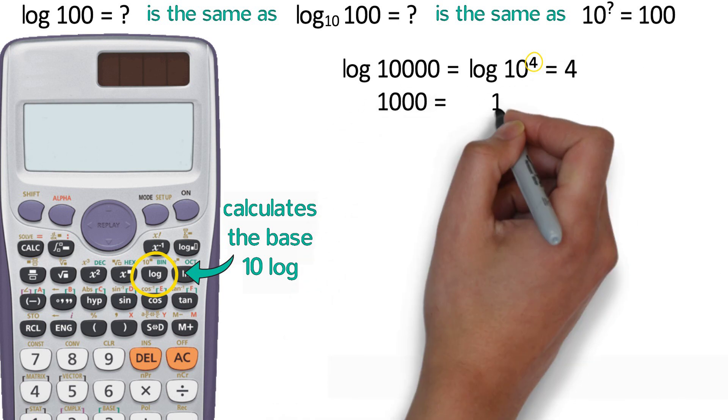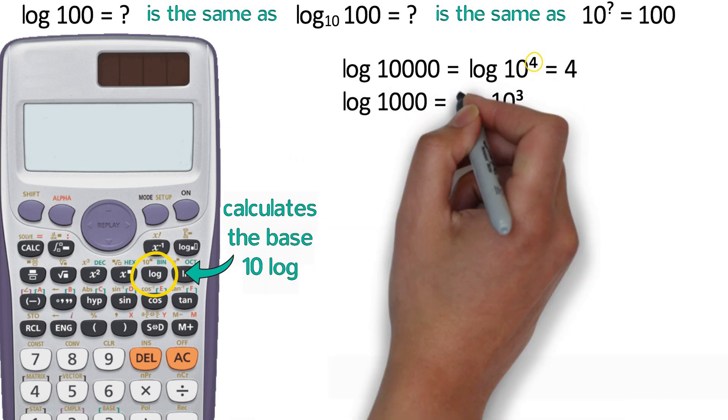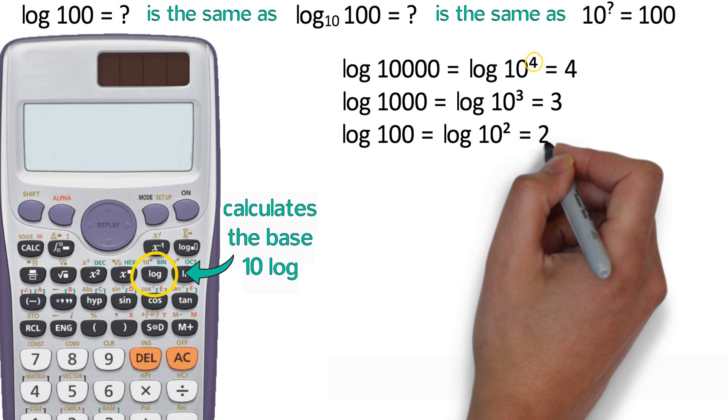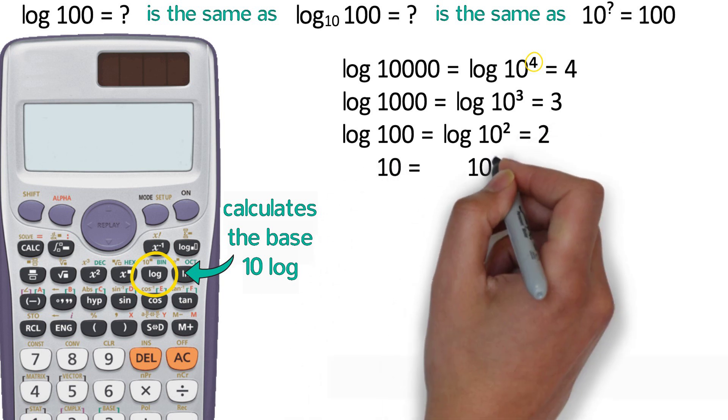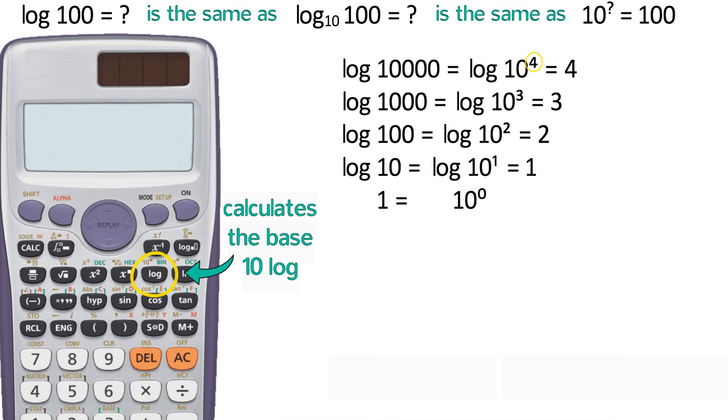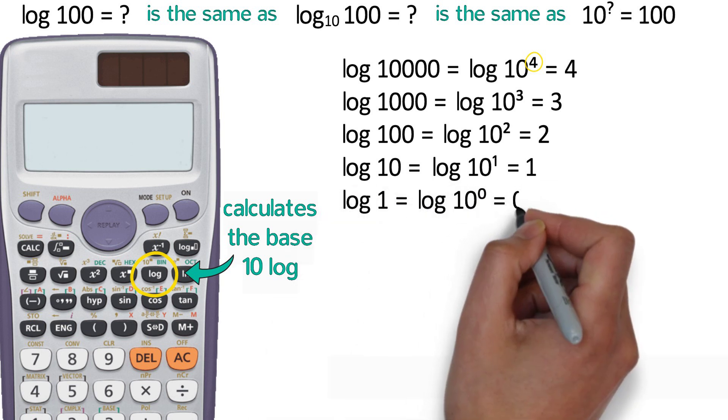1,000 is 10 to the third power, so the log of 1,000 is 3. 100 is 10 to the second power, so the log of 100 is 2. 10 is 10 to the first power, so the log of 10 is 1. 1 is 10 to the zeroth power, so the log of 1 is 0.